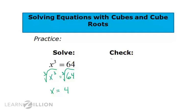We can check that quickly by plugging that back in for x. So, 4 to the power of 3 equals 64, which means 4 times 4 times 4 equals 64, and that is true. 64 equals 64. That checks out. So, this is our answer.